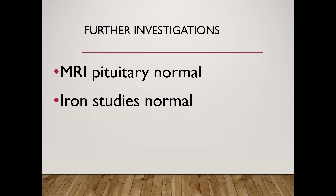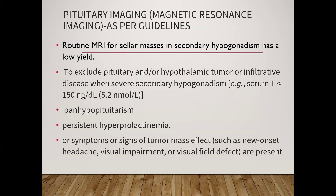In our patient, pituitary MRI was done and found normal; iron studies were also normal. Routine MRI for sellar mass in secondary hypogonadism has low yield. Indications for pituitary MRI include: severe hypogonadism with serum total testosterone less than 5.2 nmol/L (150 ng/dL) — especially less than 5 nmol/L; evidence of panhypopituitarism or other hormonal deficiencies; persistent hyperprolactinemia; or symptoms and signs of a tumor mass effect such as new-onset headache, visual impairment, or visual field defects.